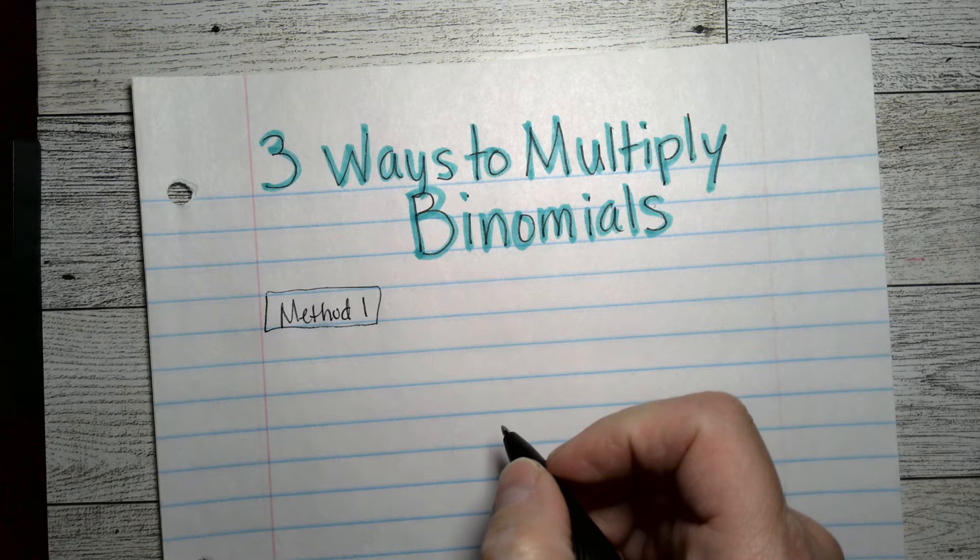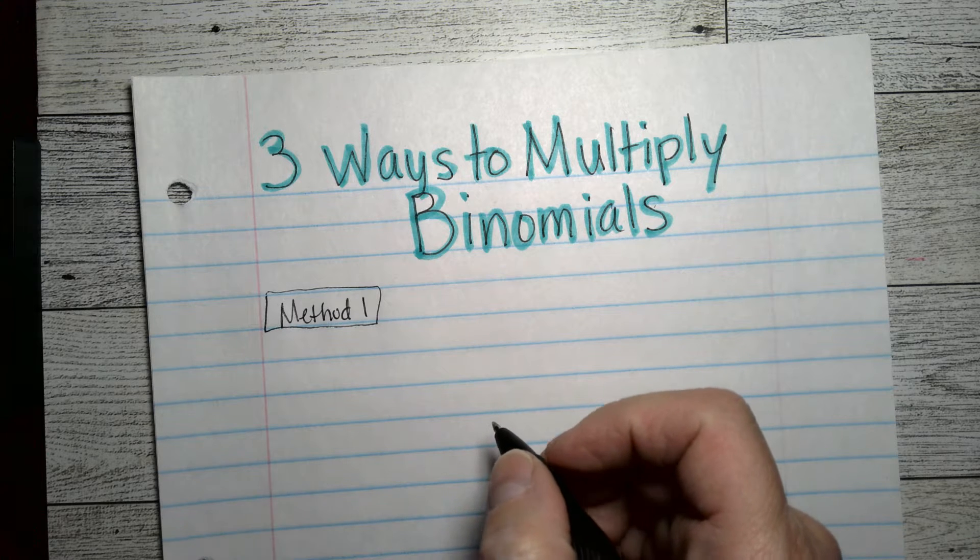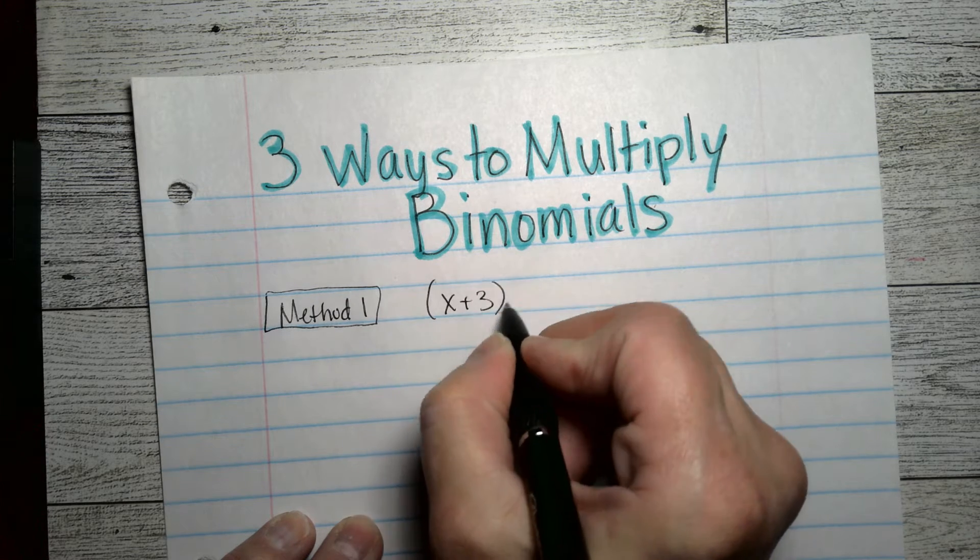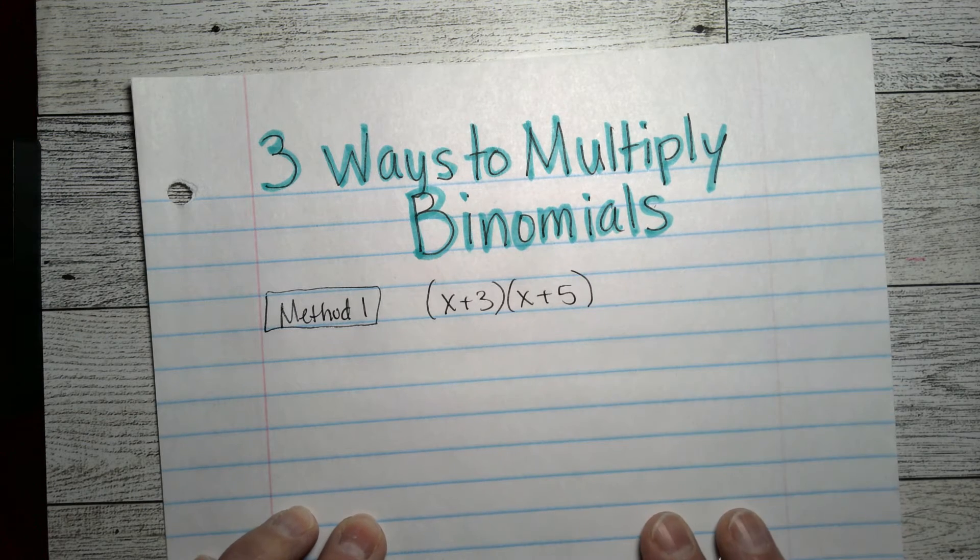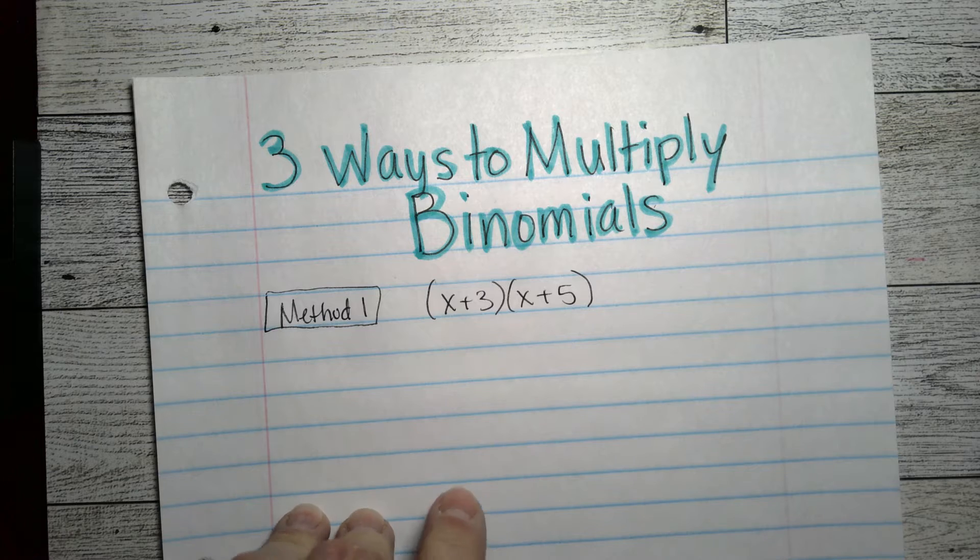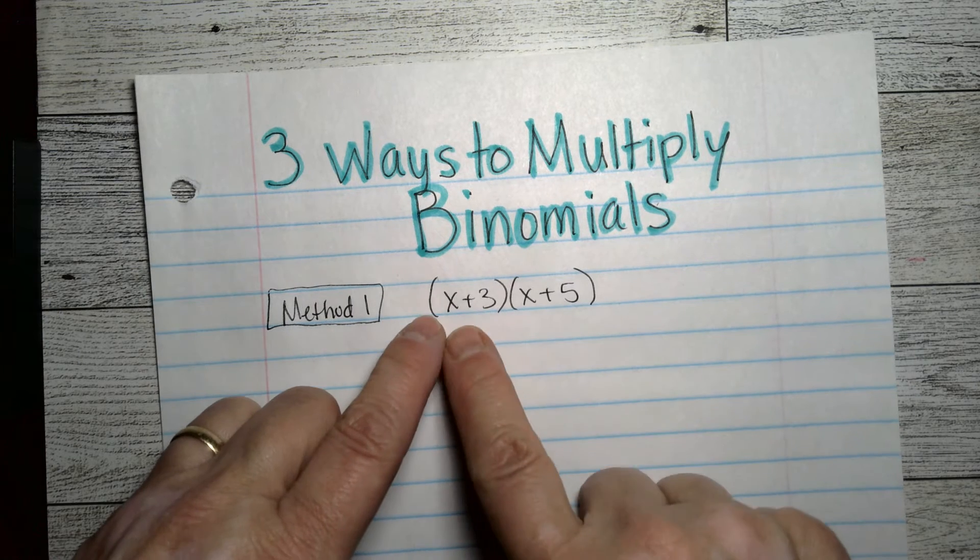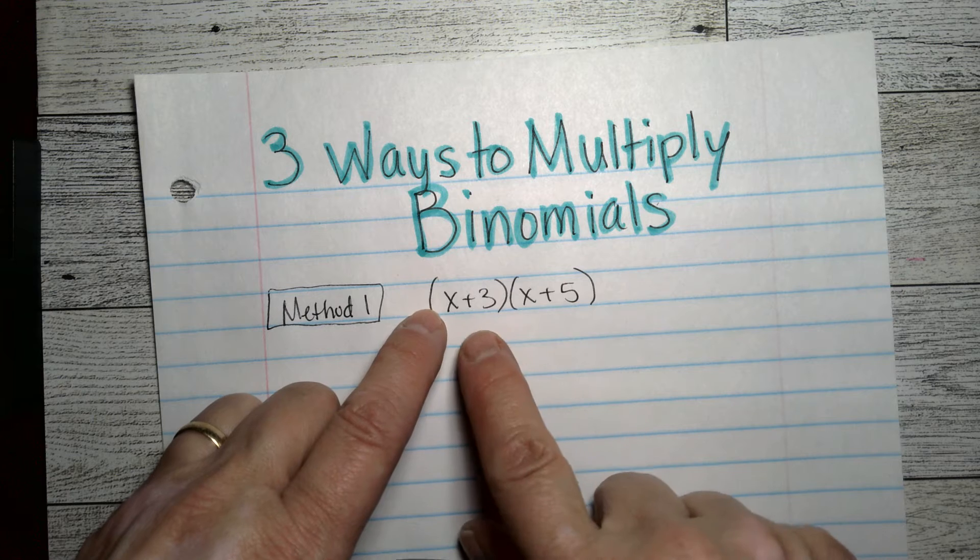And method one is like a fancy distributive property method. So we have x plus three times x plus five. And the idea here, what you have to do when you multiply these binomials is that every term needs to be multiplied together.